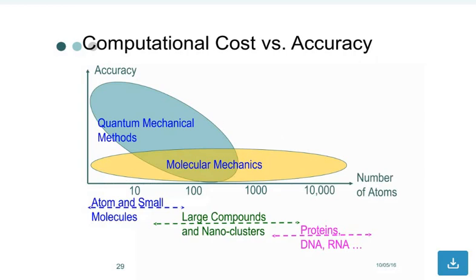Computational cost versus accuracy. You can see the accuracy axis with quantum mechanical methods and molecular mechanics. The x-axis shows from small molecules to large compounds and nanostructures, proteins, DNA, RNA based on the number of atoms.